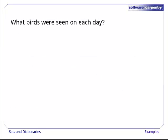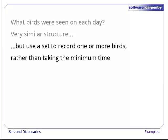What if we want to find out what birds were seen on each day that we were observing? This is similar to the problem we just solved, so the function we'll write has a similar structure. However, since we probably saw more than one kind of bird each day, the values in our dictionary need to be some sort of collection. Since we're only interested in which birds we saw, we can use a set.